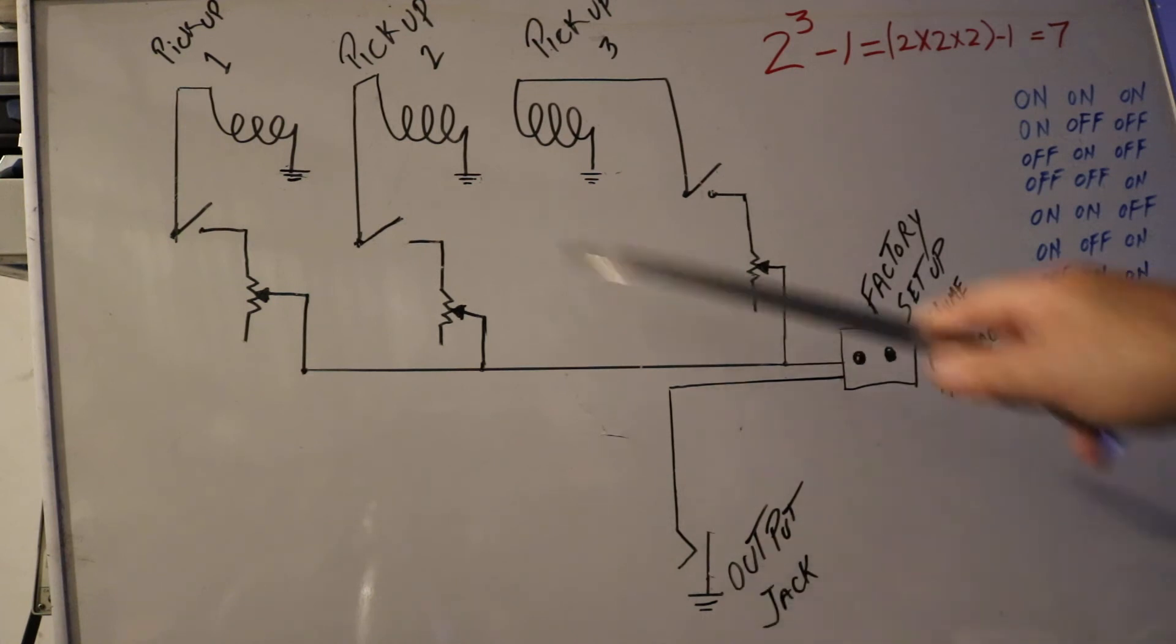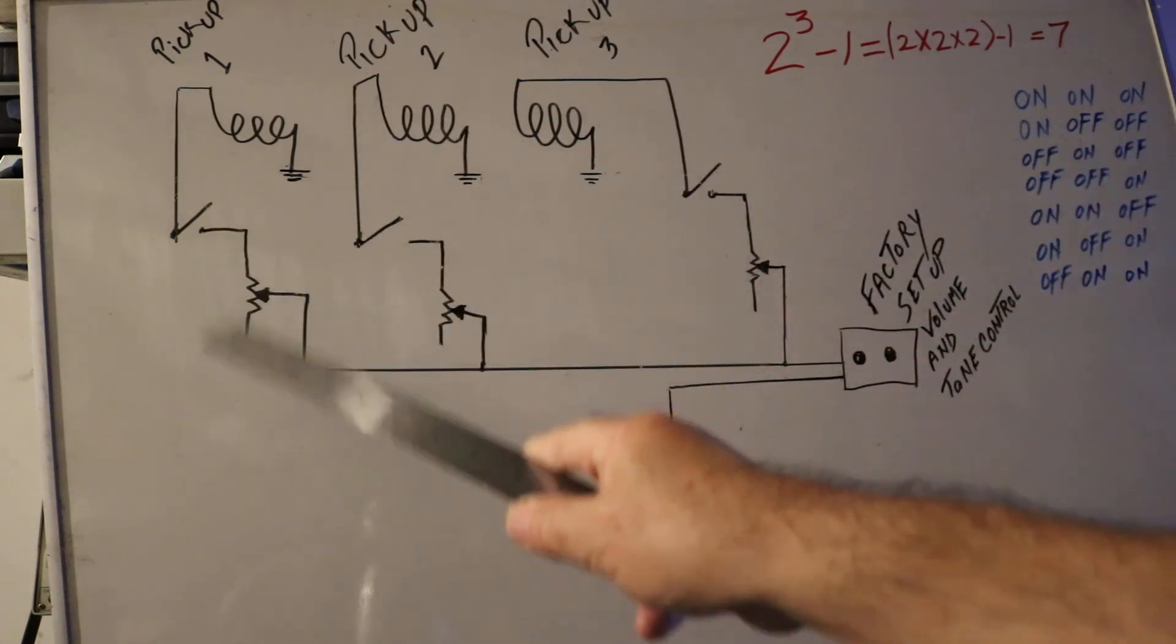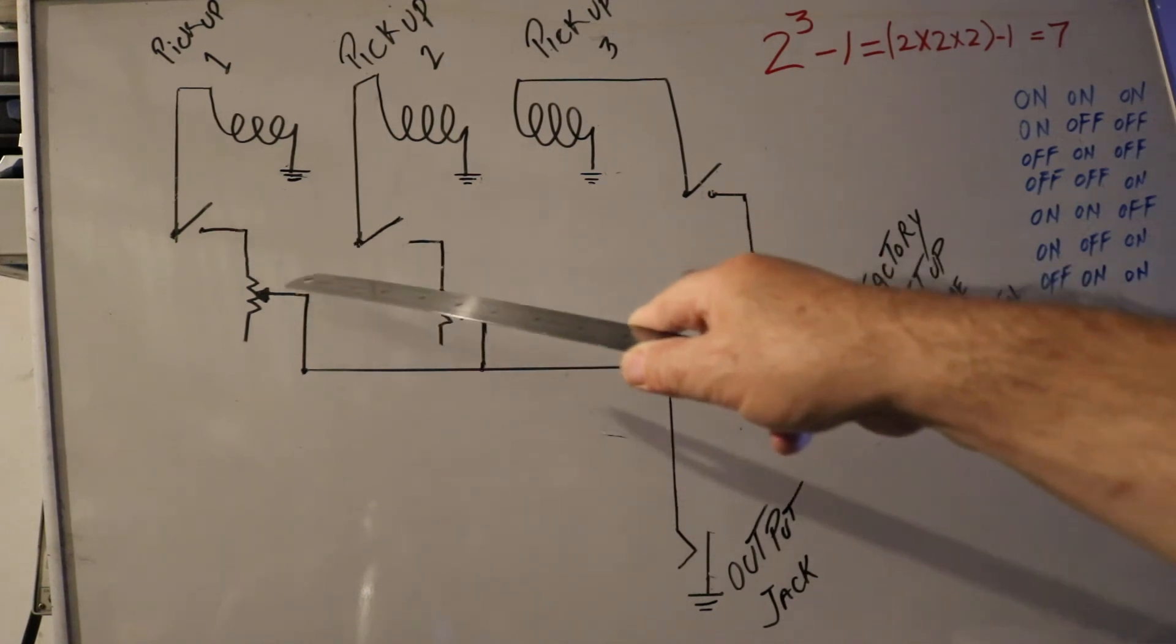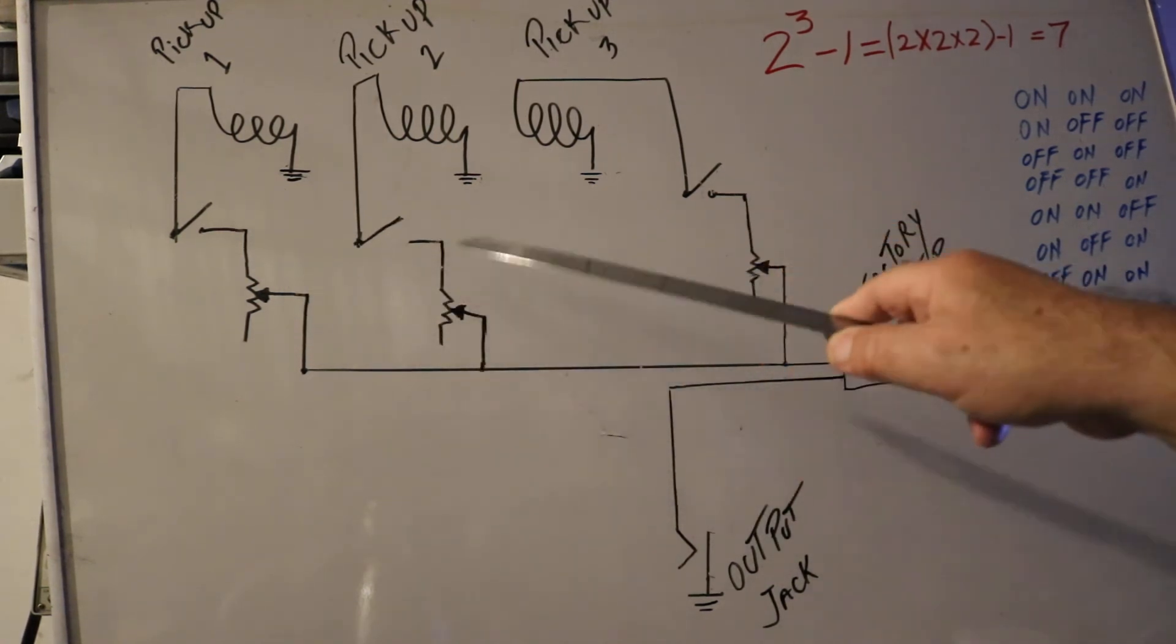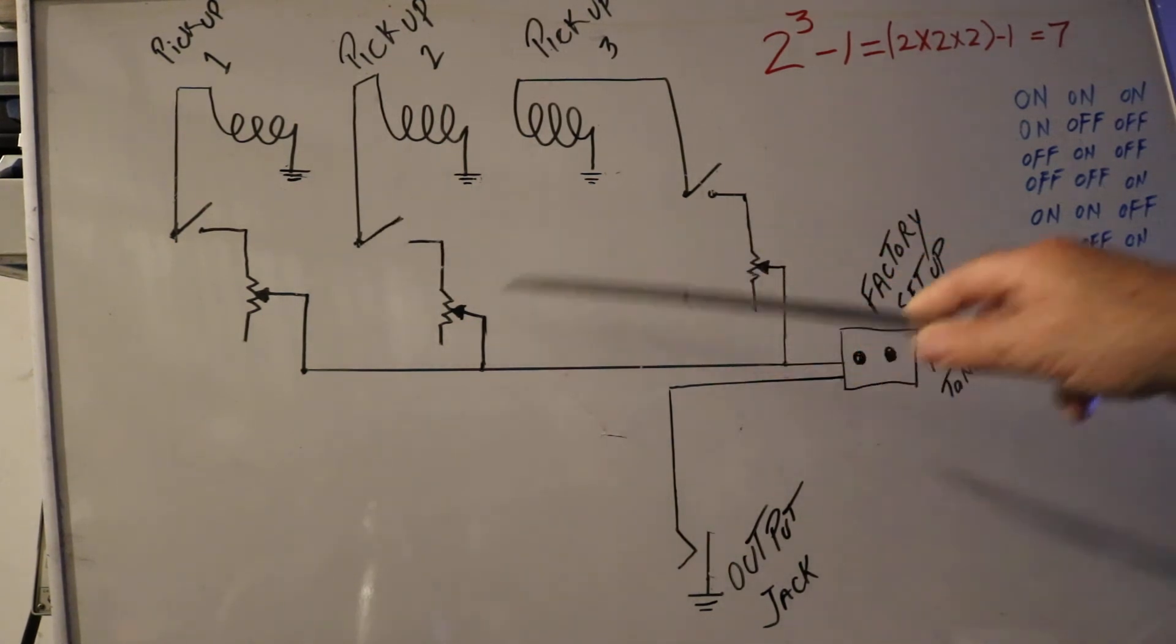So one end of the pickup directly goes to the output jack. Every single pickup connects to the switches, then connects to the potentiometer or volume control. So we have volume - we decide how much sound we want to draw from every pickup.